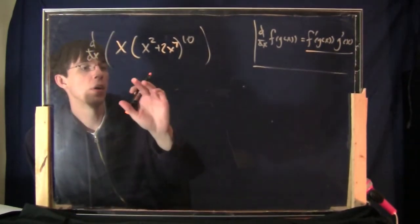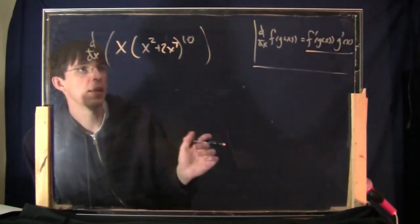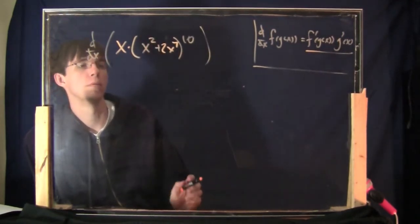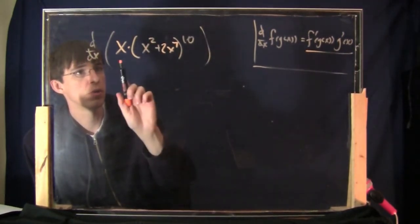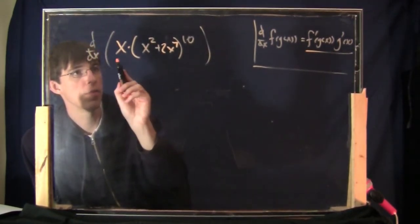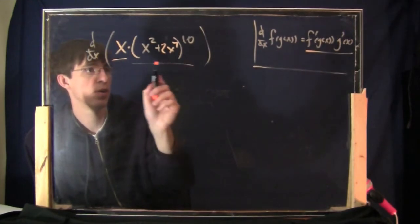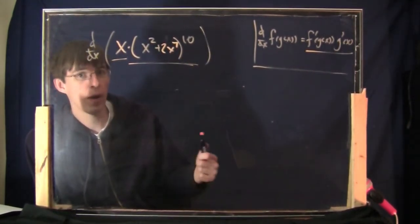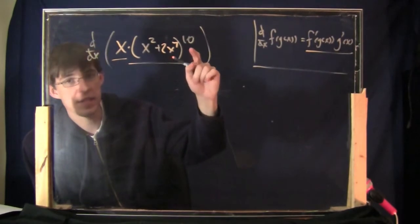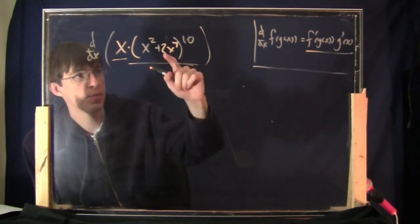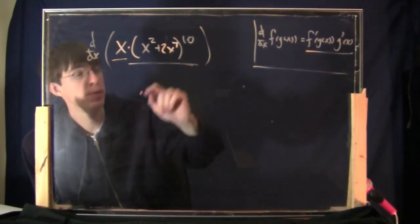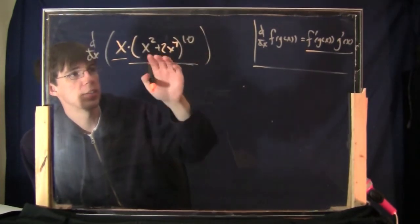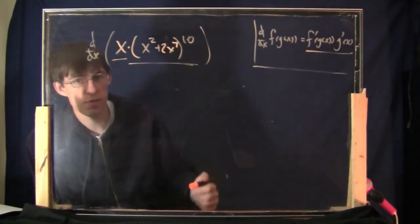One thing that might occur to you is to distribute the x inside the parentheses, but you can't do that because of this 10th power — you can't distribute inside the 10th power. What you're going to have to do instead is recognize this is multiplication, so you're going to do the product rule, where the first part is x and the second part is all of that. At some point while doing the product rule, you're going to have to take the derivative of this part, and when that moment comes, you do the chain rule — because this is a thing inside of another thing.